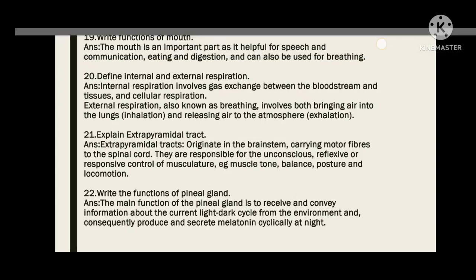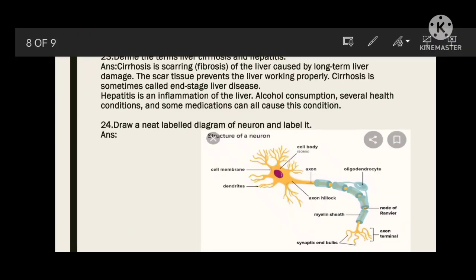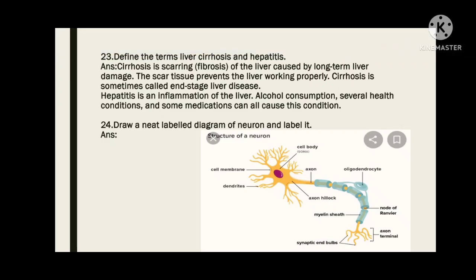Define liver cirrhosis and hepatitis. Cirrhosis is scarring (fibrosis) of the liver caused by long-term liver damage; the scar tissue prevents the liver from working properly and is sometimes called end-stage liver disease. Hepatitis is the inflammation of the liver, caused by alcohol consumption, several health conditions, or some medications.